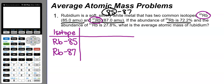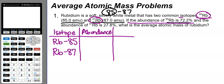The next column in my table is abundance — short for percent abundance. Looking back at the problem, the abundance of rubidium-85 is 72.2% and the abundance of rubidium-87 is 27.8%.